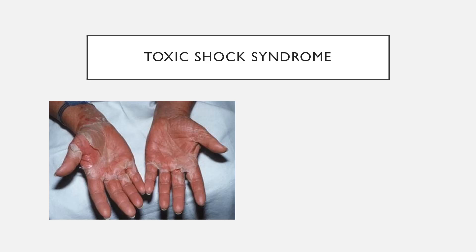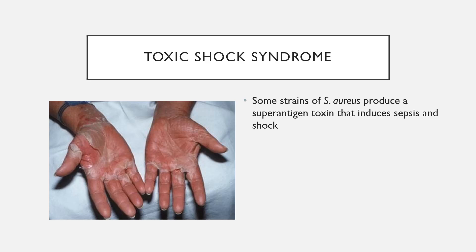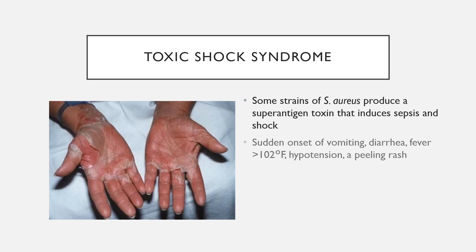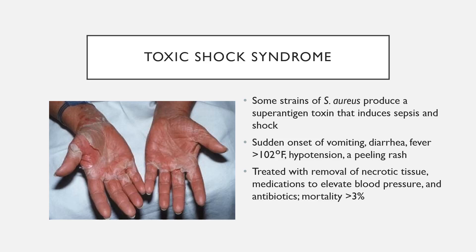Toxic shock syndrome can be caused by a variety of different pathogens, but the most common is Staphylococcus aureus. As we've learned, S. aureus is capable of producing toxins — we saw this in food poisoning. It produces a super antigen toxin that induces sepsis and septic shock, called a super antigen because it induces an extreme inflammatory response. It is characterized by sudden onset of vomiting, diarrhea, fever greater than 102°F, hypotension, and a peeling rash.